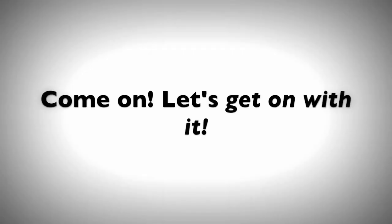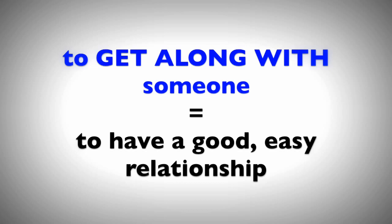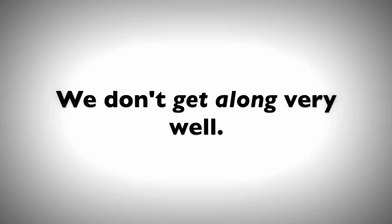Number three: 'get along with someone'. Example: 'I get along well with all my colleagues.' This simply means to have a good, easy relationship with someone — you can relate well to each other and have good conversations. You can also say 'get on with someone', which is a bit more informal. Or just 'get along': 'We don't get along very well' — meaning we don't like each other or we don't communicate well.